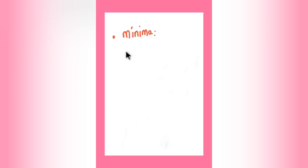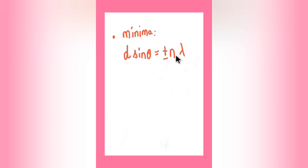Looking into the formula related to maxima and minima: if the slit width d sinθ is equal to ±nλ, where n takes integral values 1, 2, 3 and λ is the wavelength, substituting n=1 gives the first minimum, and n=2 gives the second minimum.